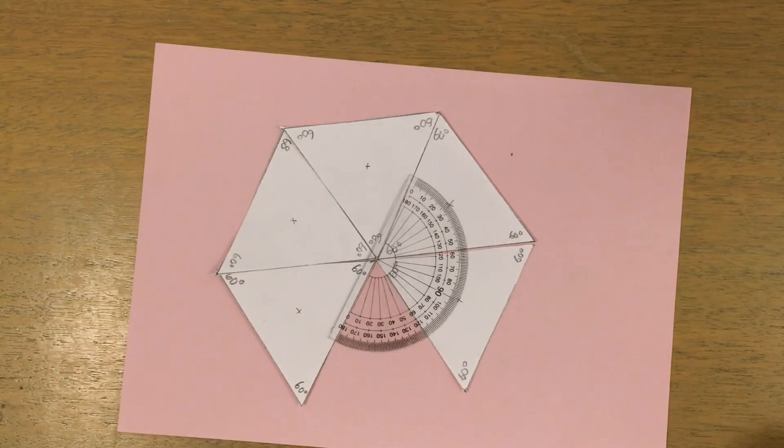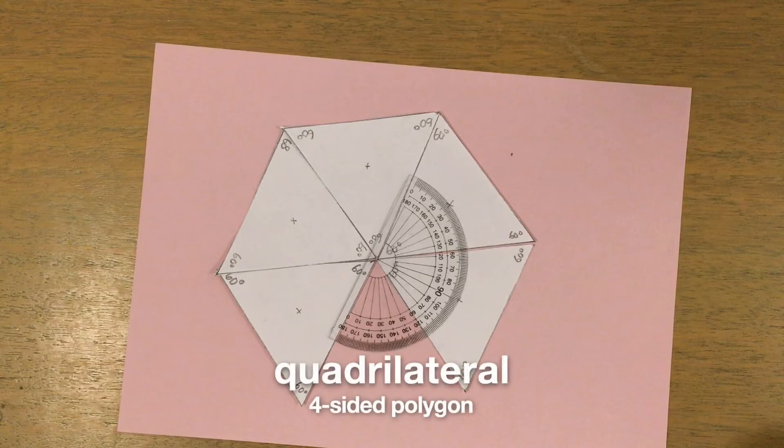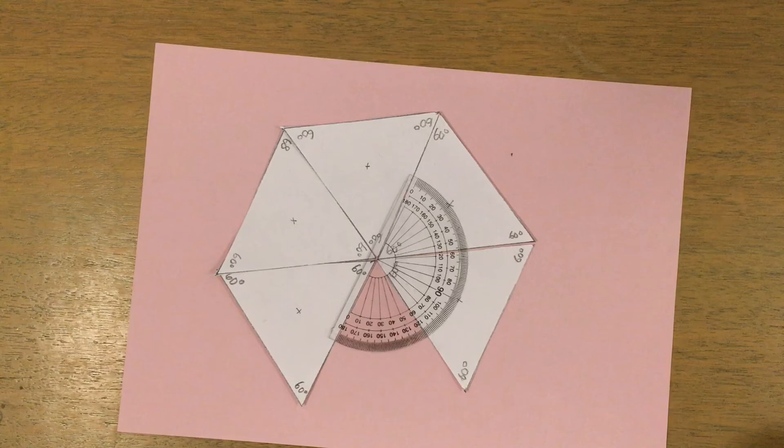What about a four-sided polygon? Regular quadrilaterals are, of course, squares, which tessellate. You can probably see examples of tessellated squares around you.